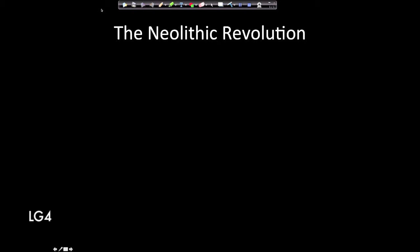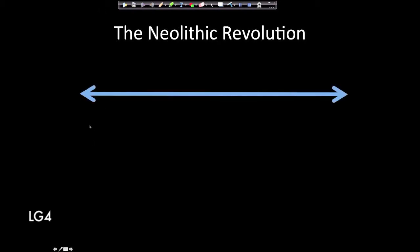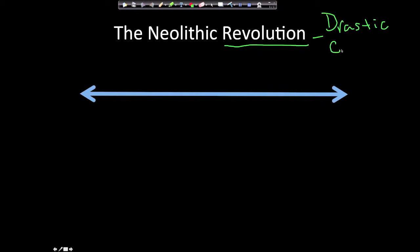Today we're going to talk about the Neolithic Revolution. To begin, we need to understand what the word revolution means. Revolution means a drastic change. For the Neolithic Revolution to make any sense, we need to first talk about what it was like before the revolution. So before the Neolithic Revolution was a period called the Paleolithic Era.